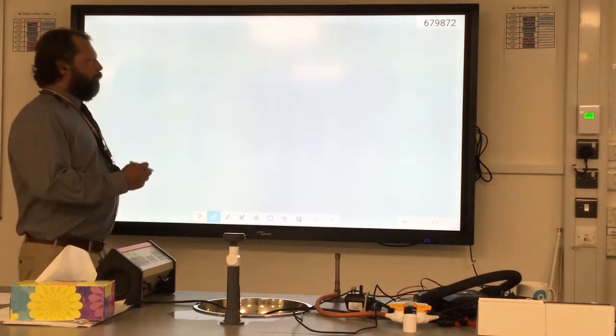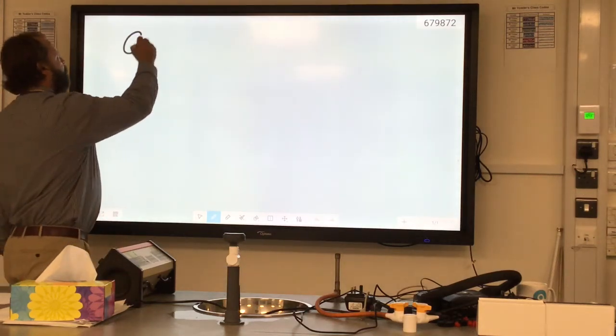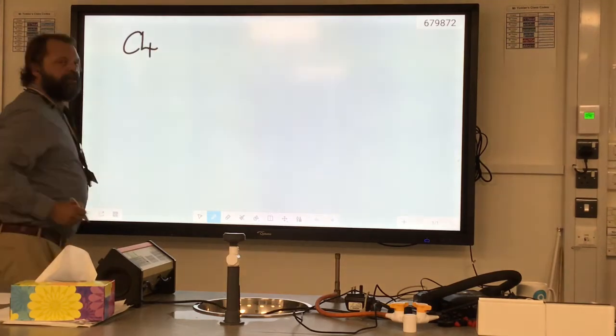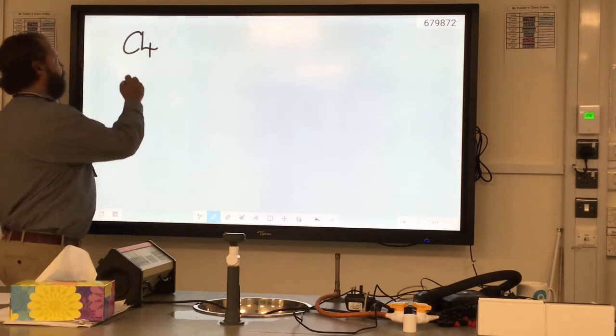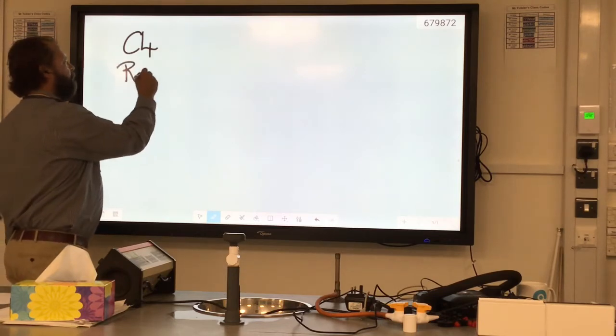Okay, hi everybody. We're going to look at chemical calculations, which is chapter C4. And we're just going to look at the very first part of this chapter, where we're calculating relative masses.